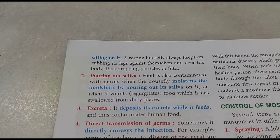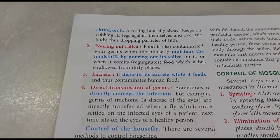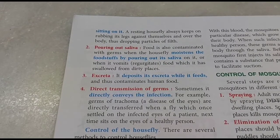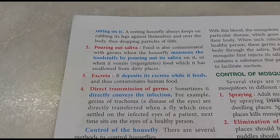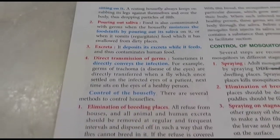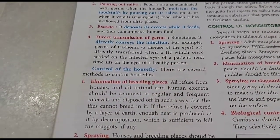The fourth method is direct transmission of germs. If a housefly sits on an infected person's eye and then sits on your eye, germs of trachoma and conjunctivitis may spread that way. So how do we control the population of the housefly?